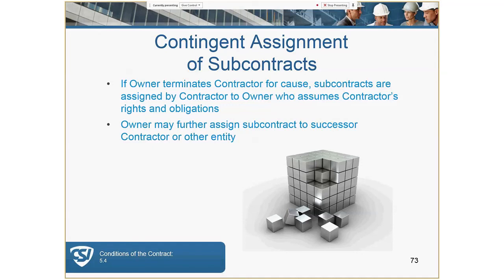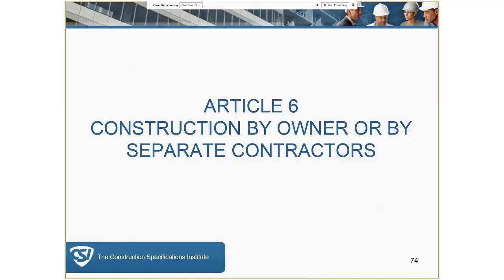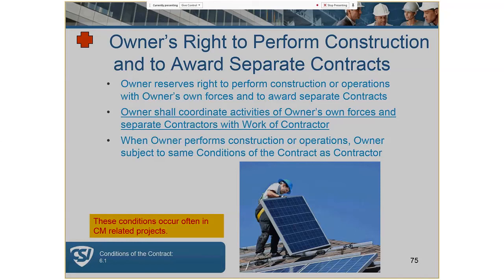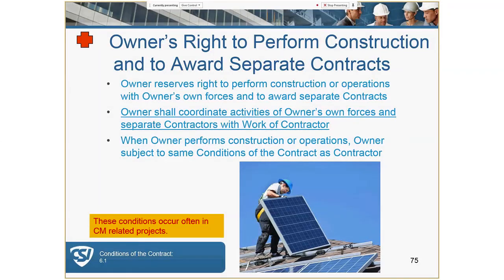If the general contractor is terminated, the sub can remain with the project and contracts can be reassigned to the owner or a different contractor. If the owner has the right to carry out portions of the work, the owner shall coordinate the activities of their own forces and separate contractors with the work of the contractor. It is the owner's responsibility to coordinate their own forces with the contractor — not the architect's, and not the contractor's responsibility to coordinate the owner's subs.